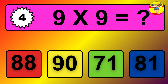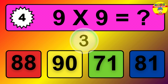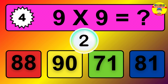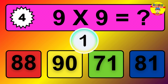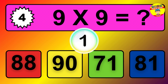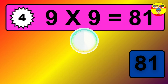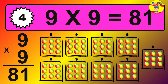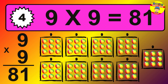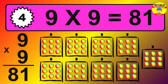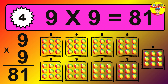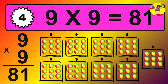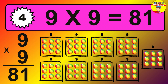Question 4. 9 times 9 equals what? The answer is 9 times 9 is 81. To calculate, we have 9 groups with 9 balls each one. So, how many balls do we have? 81 balls.